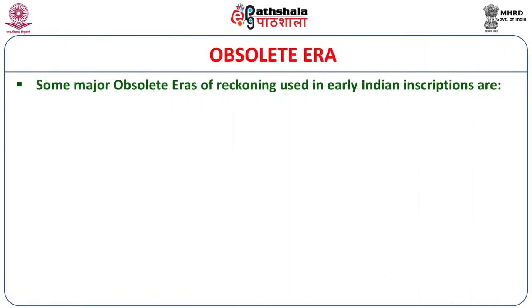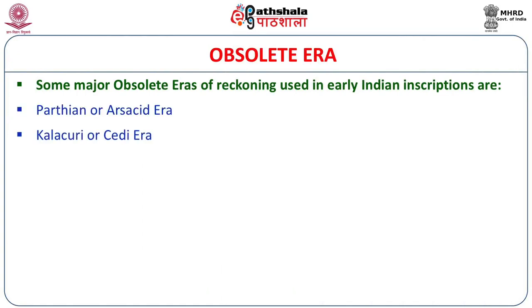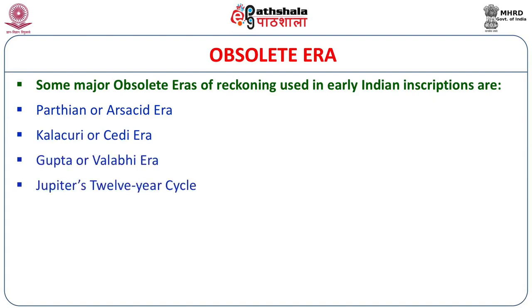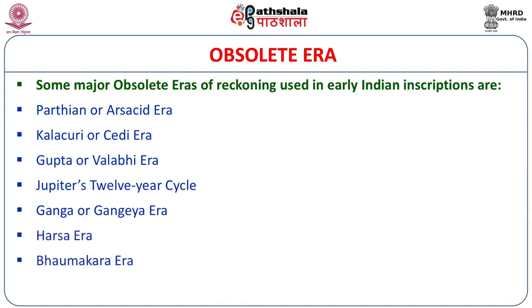If we look at the obsolete eras, here again we have a long list of eras found from inscriptions precisely. These are the Parthian or Arsacid era, the Kalachuri or Chedi era, the Gupta or Balavi era, the Jupiter's 20-year cycle, the Ganga era, the Harsha era, and the Bhomokara era.